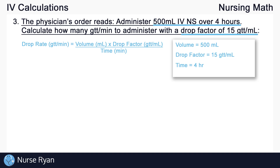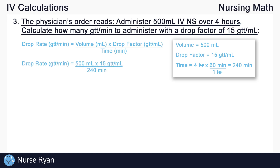The first thing we need to do is convert four hours into minutes. We simply multiply four hours by 60 minutes per hour — the hours cross out, giving us 240 minutes. Now we're all set to fill in our formula: drop rate equals 500 mils times 15 drops per mil, all divided by 240 minutes. Multiplying the top gives us 7,500 drops divided by 240 minutes, and dividing gives us an answer of 31.25 drops per minute.